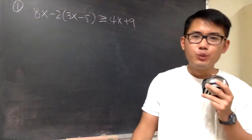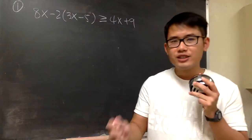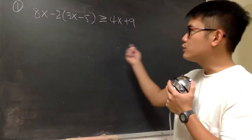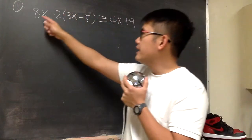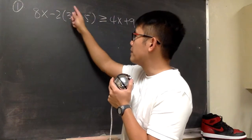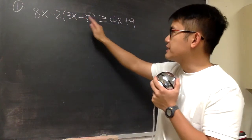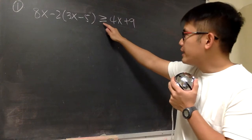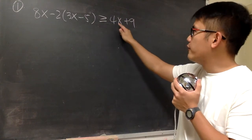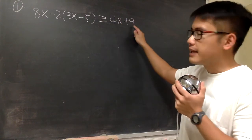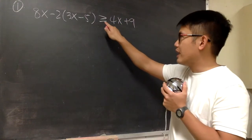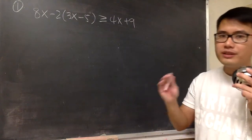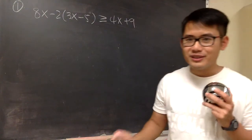In this video, I'm going to show you more examples on solving inequalities. The first one: we have 8x minus 2 times the parentheses with 3x minus 5 inside, and this is greater than or equal to 4x plus 9. As we can see, we only have one inequality symbol, so this is just a regular situation.